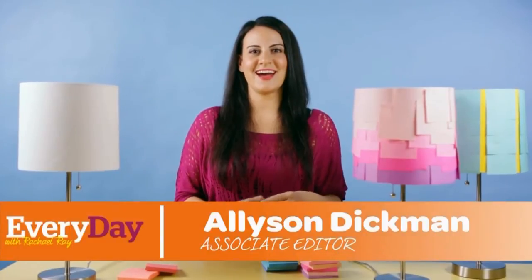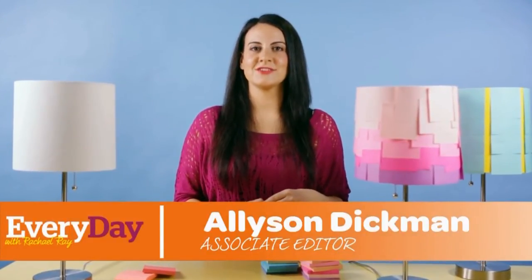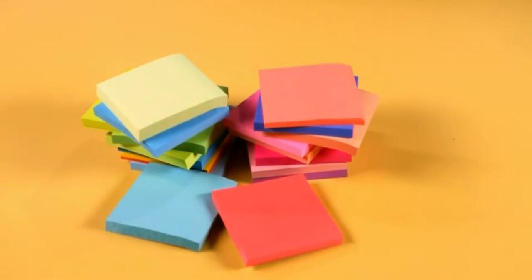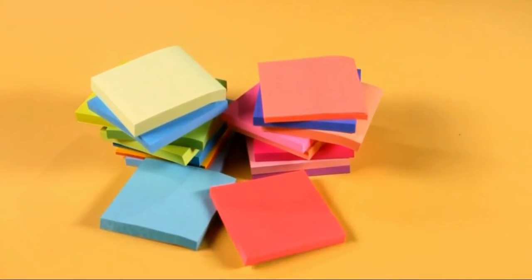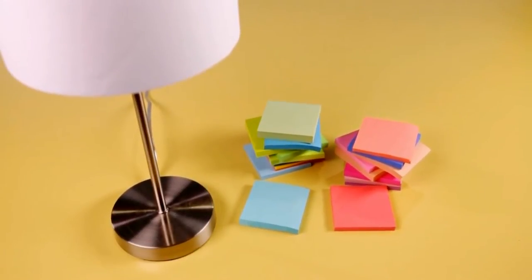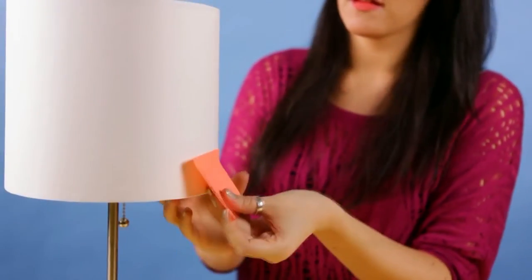If you really want to make a room stick out, try decorating your light fixtures with one simple office supply: post-its. All you need is a stack or two of post-its in coordinating colors and a lampshade.